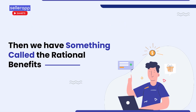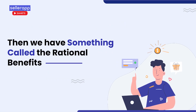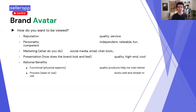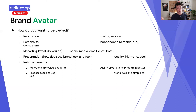Then we have something called the rational benefits. These are the functional, physical aspects as they relate to your brand and products. We wanted quality products that help people train better — that's how we wanted people to view our products rationally. The process side of that rational benefit is about how easy the products are to use. We wanted people to say the products work well and they're simple to use.